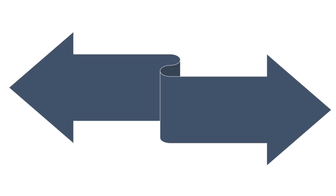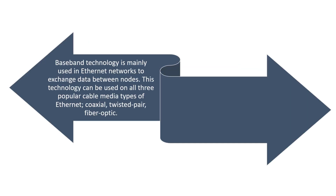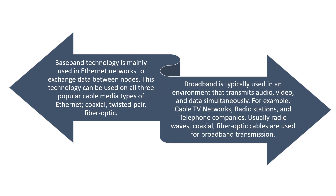Coming to the applications of these transmissions, baseband technology is mainly used in Ethernet networks to exchange data between nodes. It can be used on all three popular cable media types of Ethernet: coaxial, twisted pair, and fiber optic. Broadband is typically used in an environment that transmits audio, video, and data simultaneously.